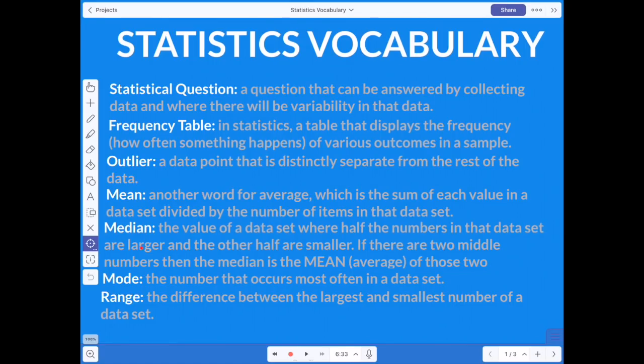The median, on the other hand, is the value of the data set where half the numbers in the data set are larger and the other half are smaller. If there are two middle numbers, and we'll talk more specifically about this as we go, then the median is the mean or the average of those two numbers. We'll go over that. But basically, the median is the number in the middle. And you have two situations. You can either have one distinct median where the number in the middle is just one value, or if you have an even data set, you'll have two numbers and you have to find the average of those two numbers.